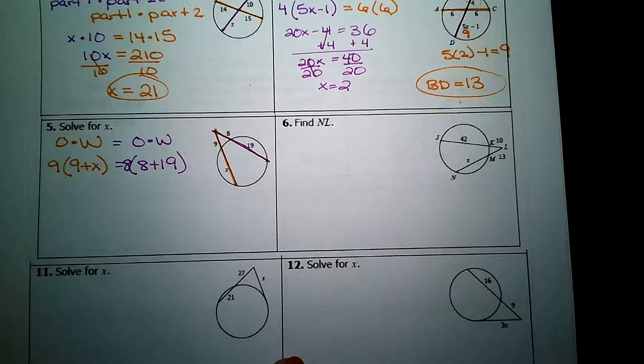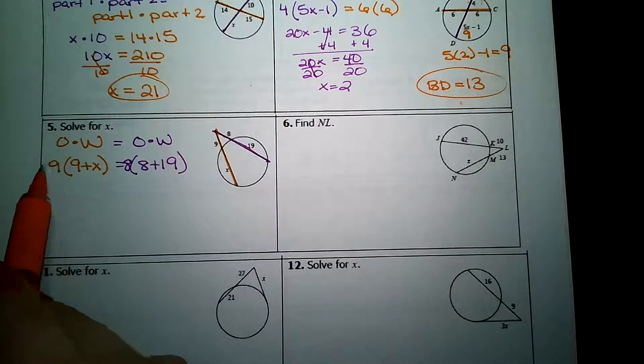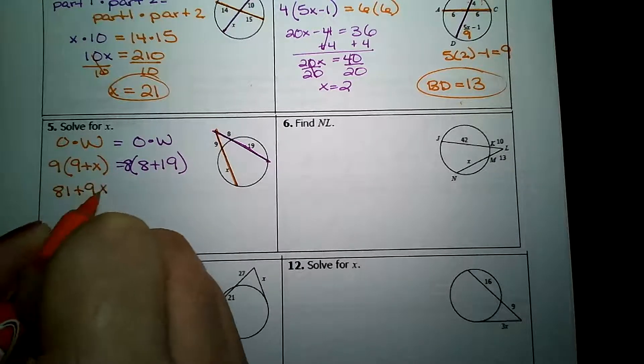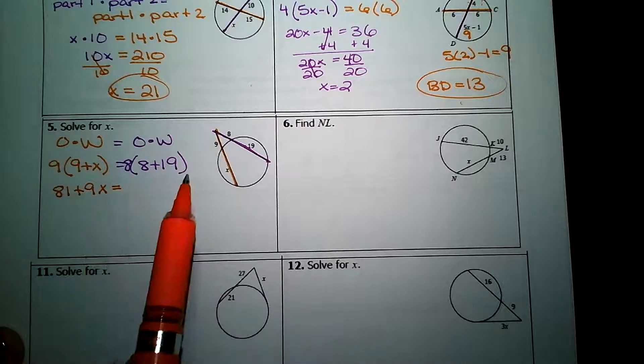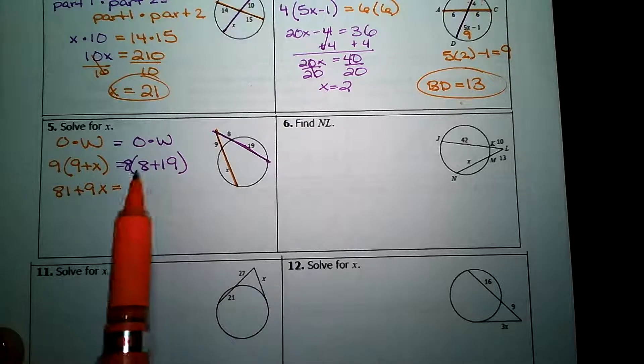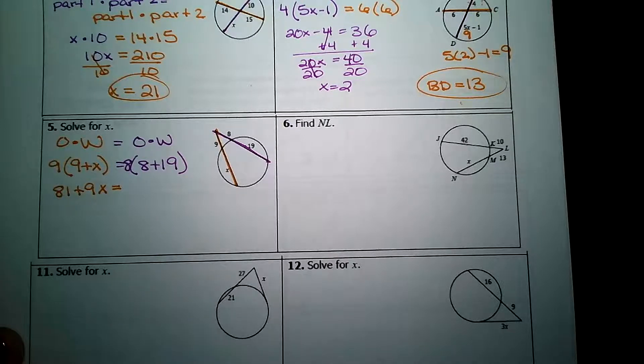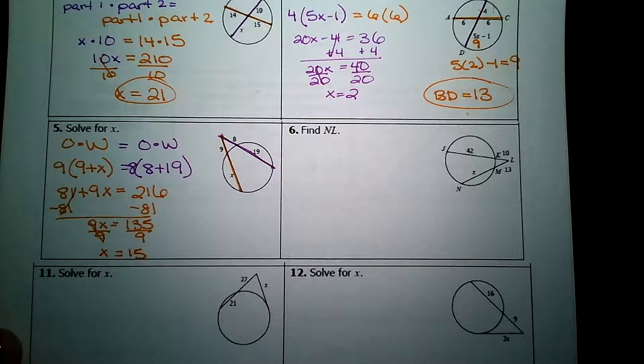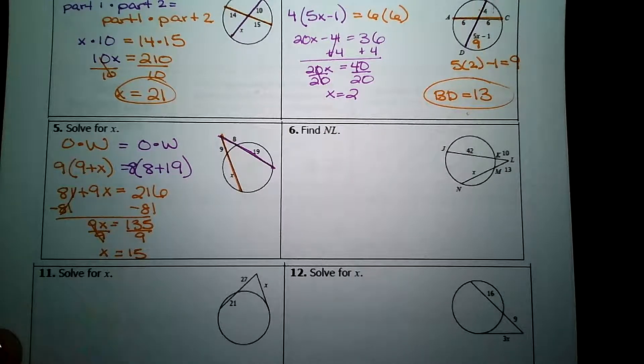All right, I'll help you out on this algebra a little bit. We need to distribute on the left side. 9 times 9 is 81. 9 times x is 9x. On the right side, there's no need to distribute. These are all numbers. So we can just do this math using the order of operations. I'm going to add my two numbers on the inside together first. 8 plus 19. That's 27. And then multiply it by the 8 that's on the outside of the parentheses. And I get 216. Now, take a moment and finish solving for x. When I finish solving for x, I got x equals 15.